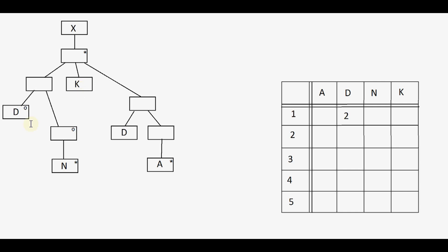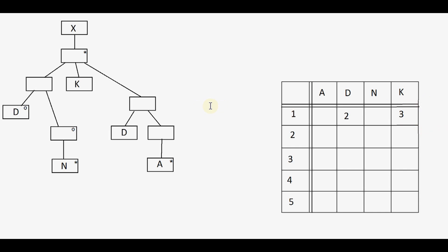We were waiting for D, N, or K. Now we are waiting for K only. We might get a K in the first state — if N is represented zero times — so if we get a K, then let's say it leads us to the third state, where we are waiting for only D.